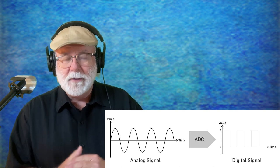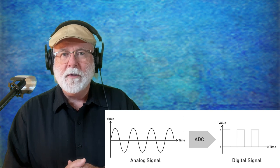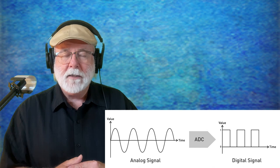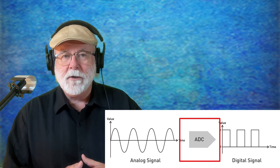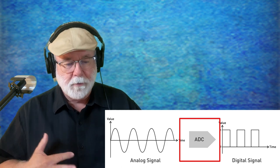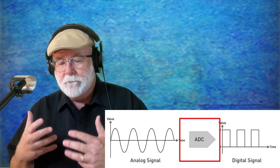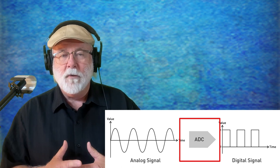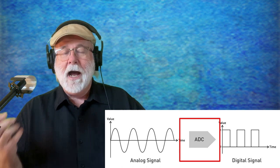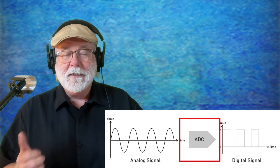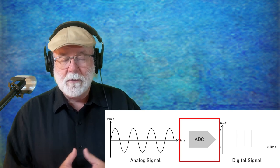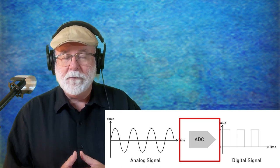If you've got a USB microphone and you're talking into it, that USB microphone has what's called an analog-to-digital converter. It converts the analog signal leaving your mouth, your acoustic guitar, or whatever you're recording into digital format and then sends it to your computer. Audacity grabs it and knows what to do with it. But until it's converted to digital, it's really kind of useless to Audacity.